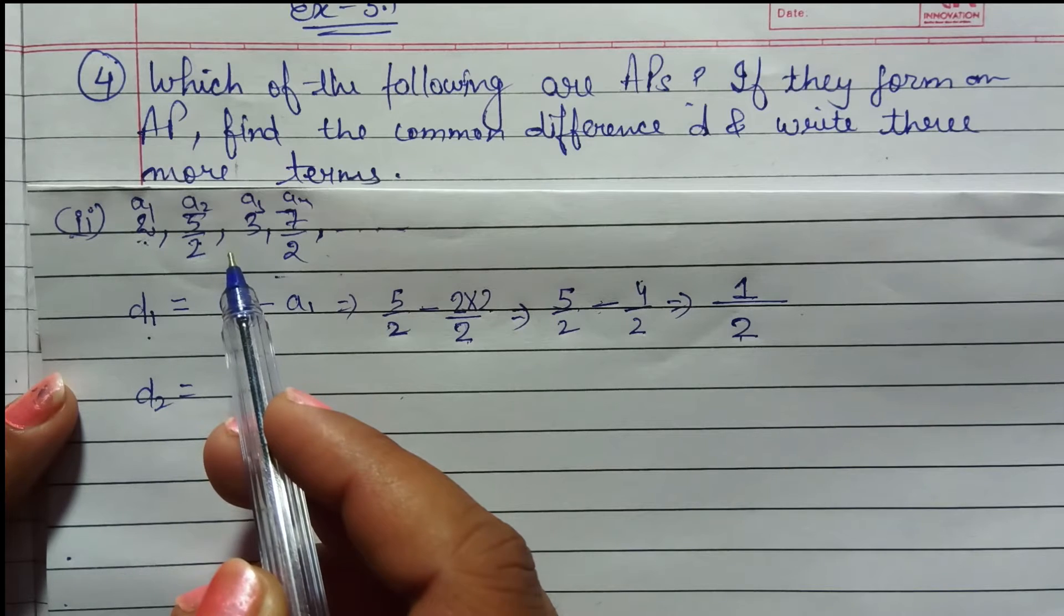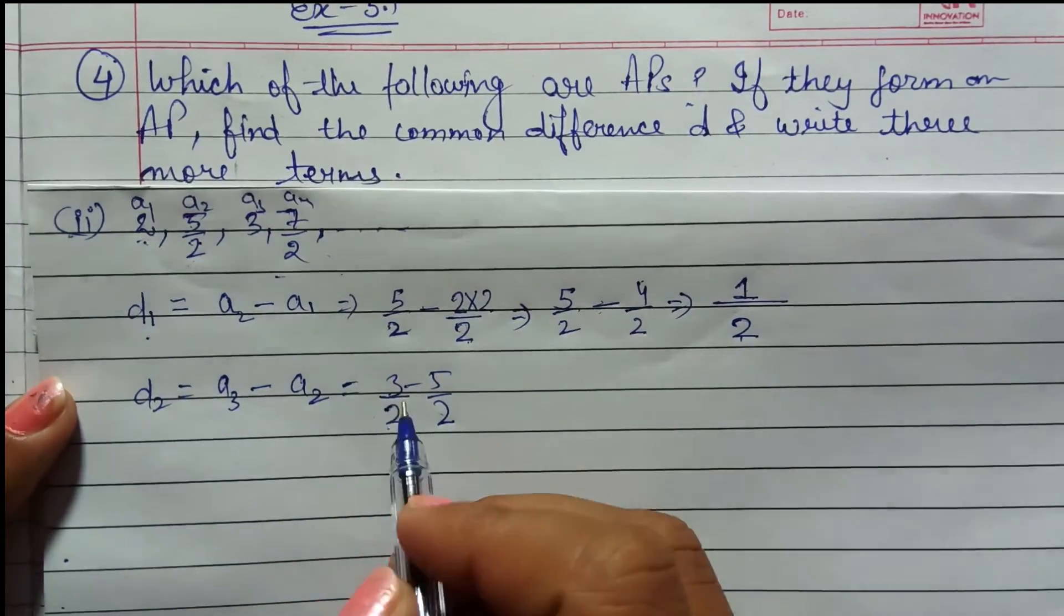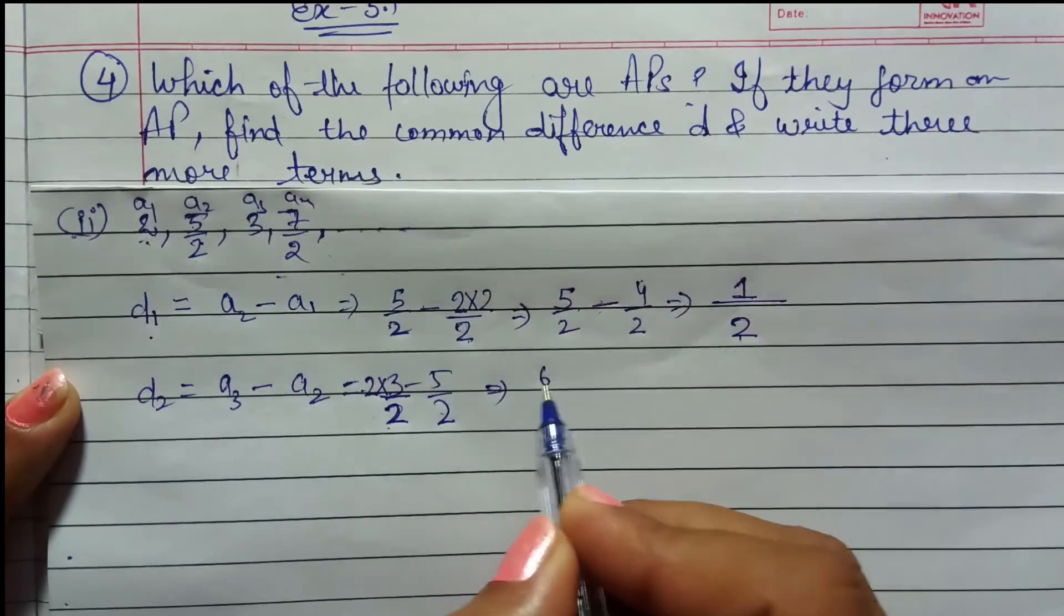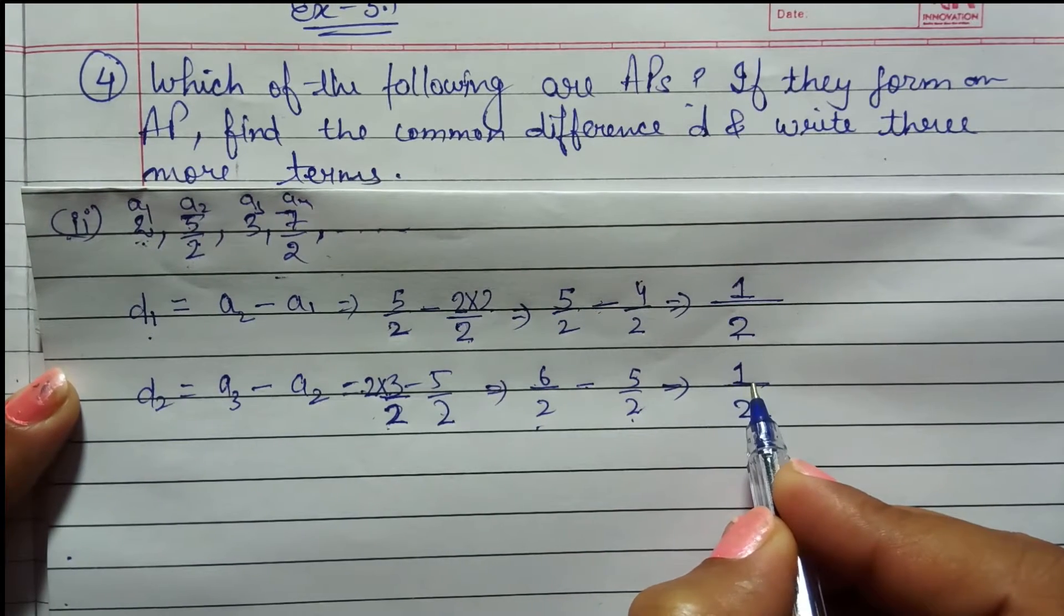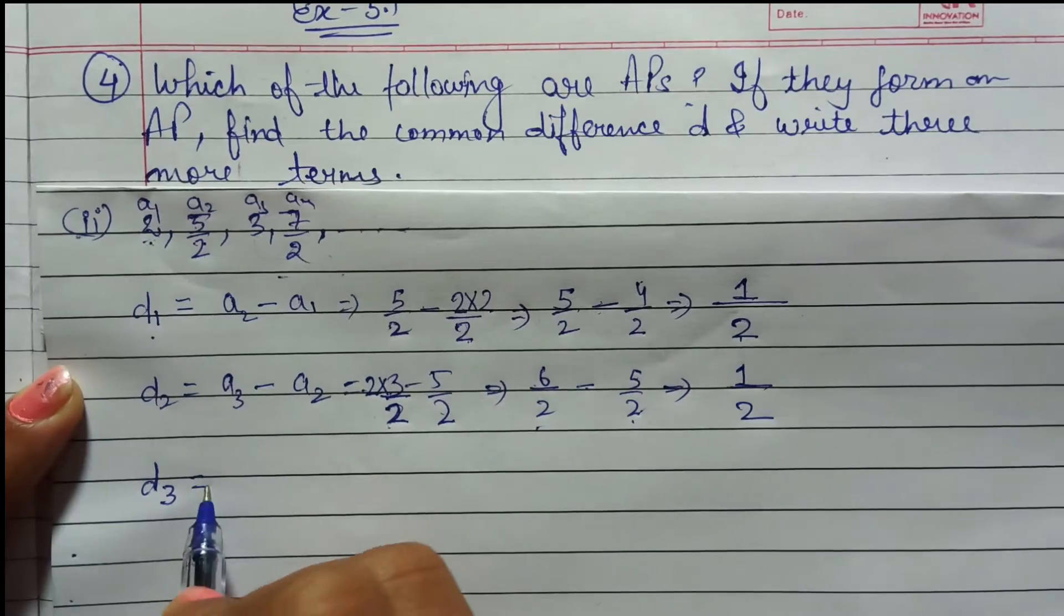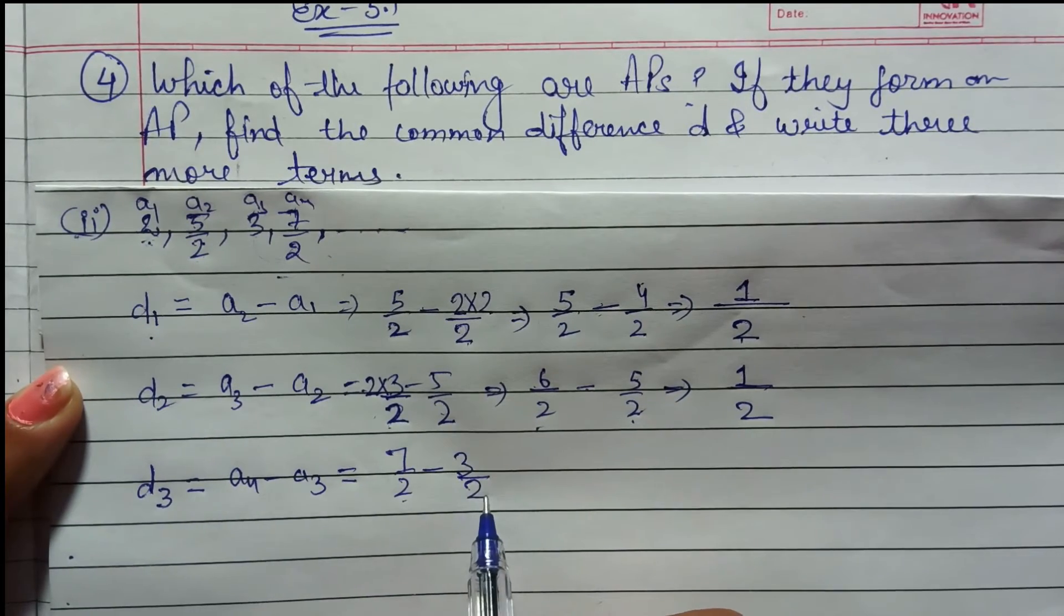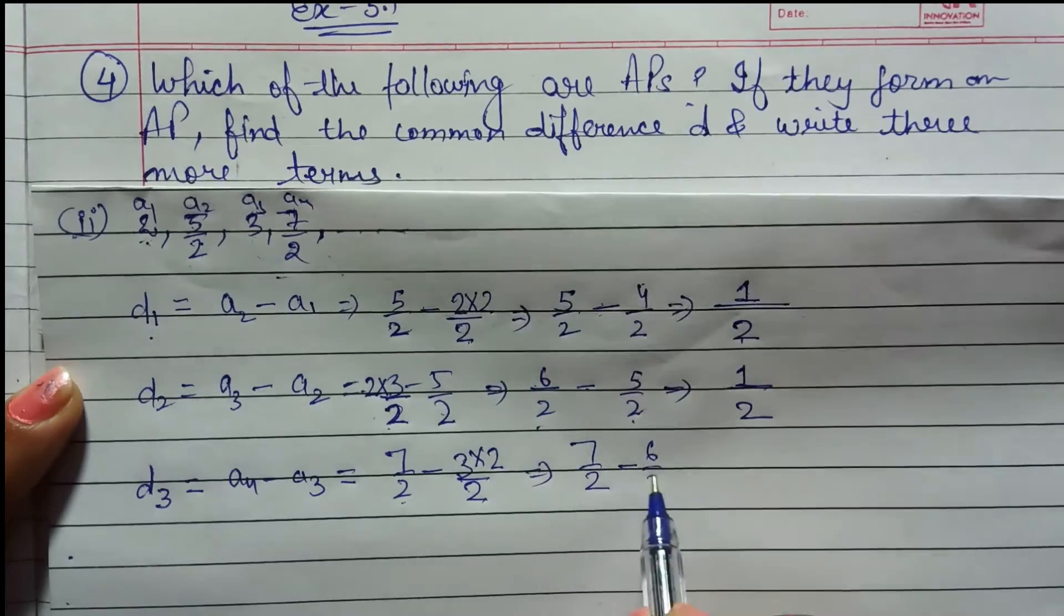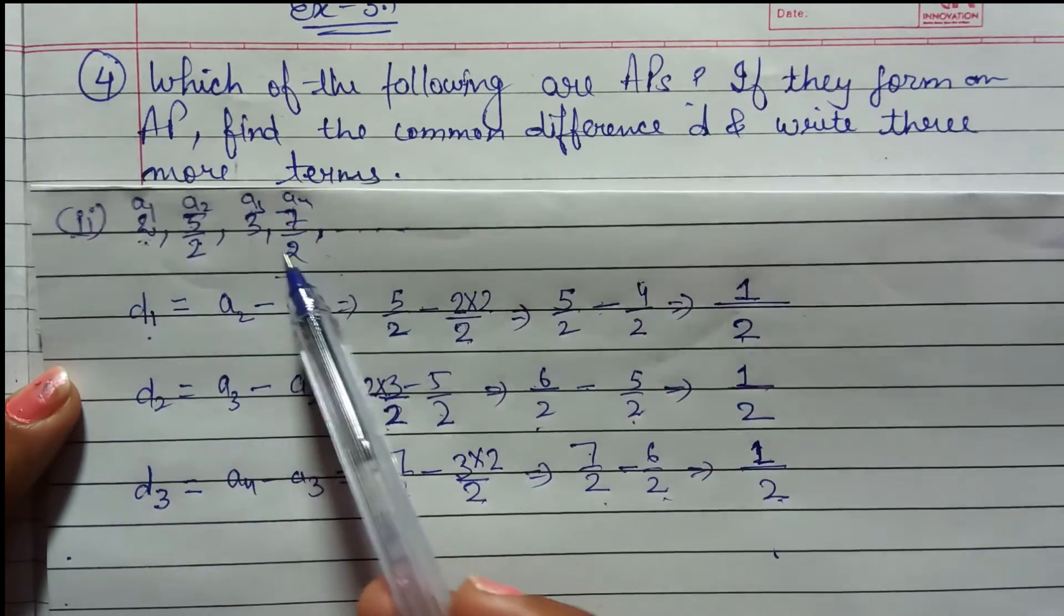D2 will come. Next two consecutive terms of difference. So that is A3 minus A2. 3 minus 5 by 2. Now the denominator is equal. We will do the denominator same. How much will it be? 1. So again 1 by 2. Now at last we will check these two terms. Now we will count D3. A4 minus A3 equals to 7 by 2 minus 3. Again we need to put 2 below. Equals to 7 by 2 minus 3 to the 6 by 2. So after solving this, 7 minus 6 is 1. So the consecutive terms of difference is equal.